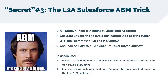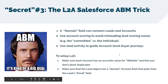Step two is to make sure that the lead object has a domain field. This is usually a formula field that pulls from the lead's email — it basically reduces whatever comes after the @ symbol down to just the domain. This is just a little bit of coding and it's not too bad to create that field.